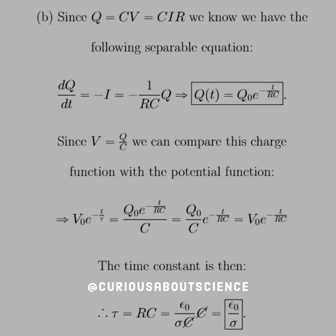All right, so in part B then, since Q is equal to CV, which we just found out was equal to CIR, we know that we have the following separable equation.